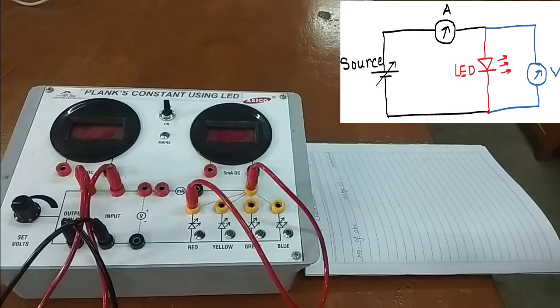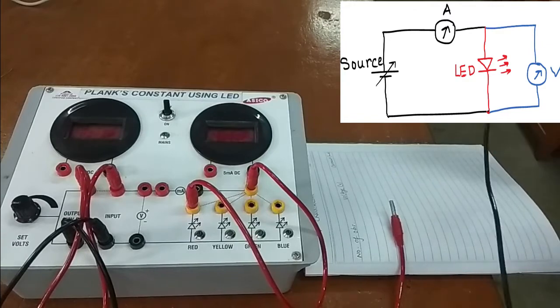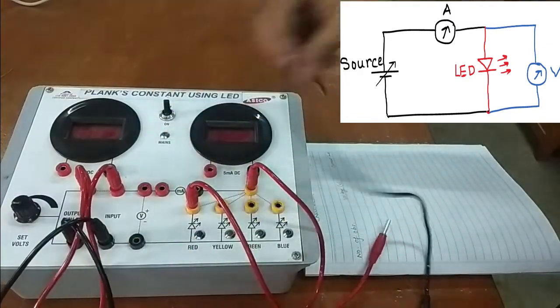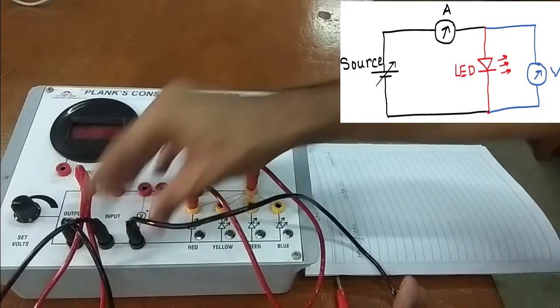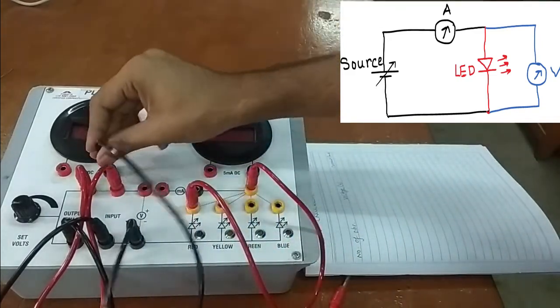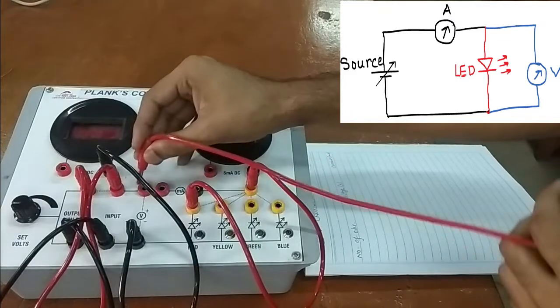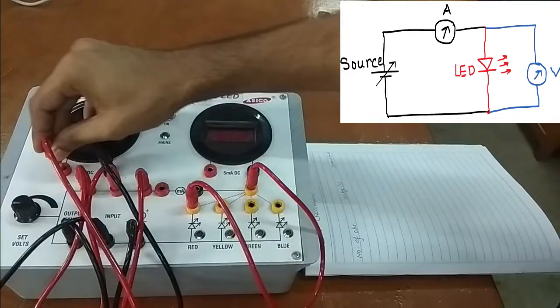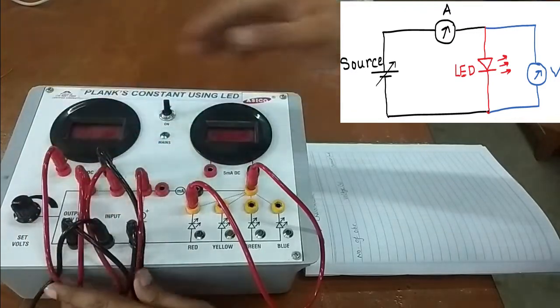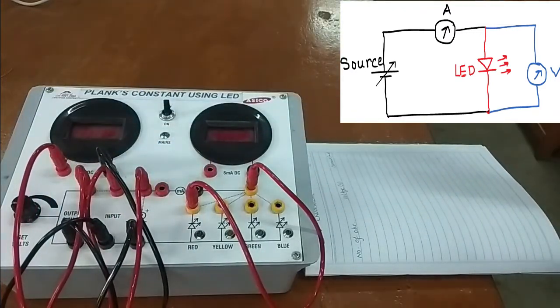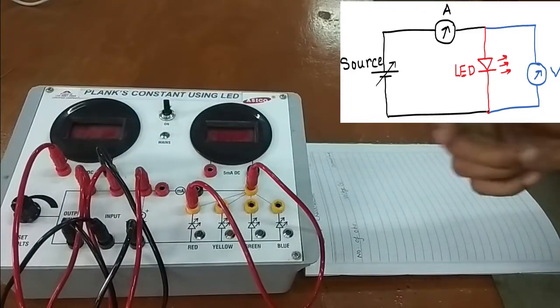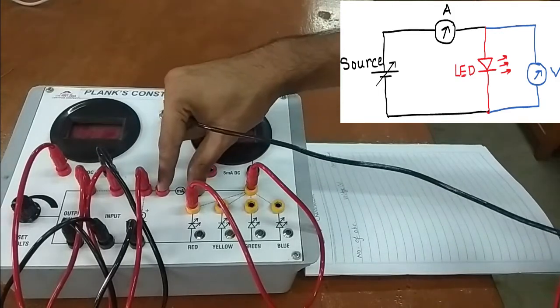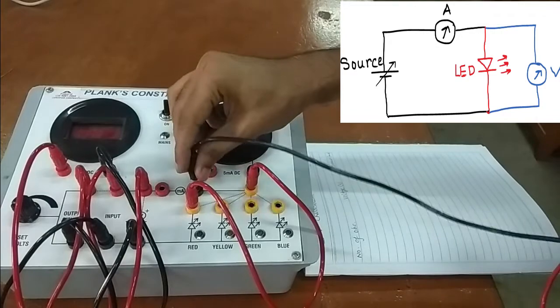Now next we have to find out the voltage. To find out voltage, connect the voltage space position to the voltmeter. Let's connect it. Now voltmeter connection is done. We need to know the current in the circuit and for that we need to connect the current position. This is the ammeter position, connect that position with the ammeter.